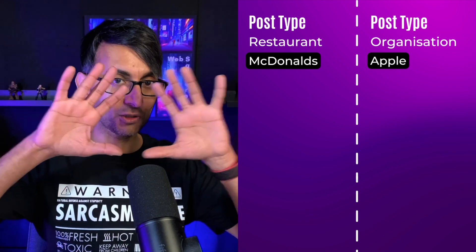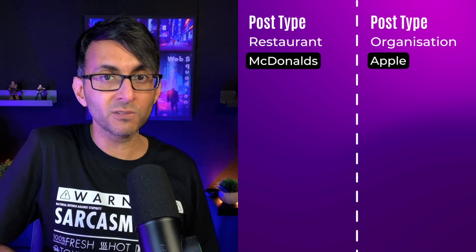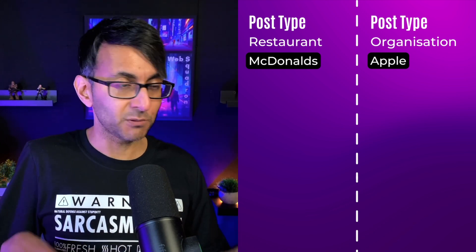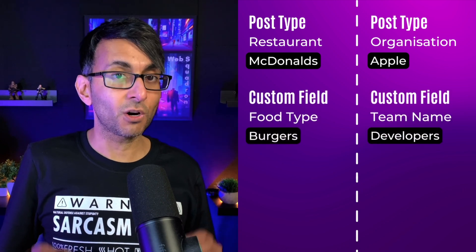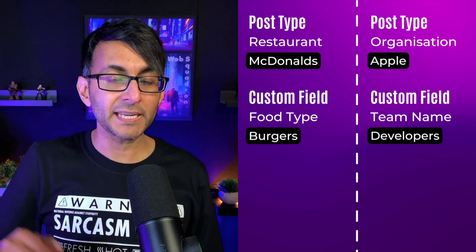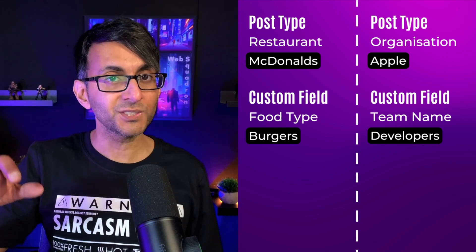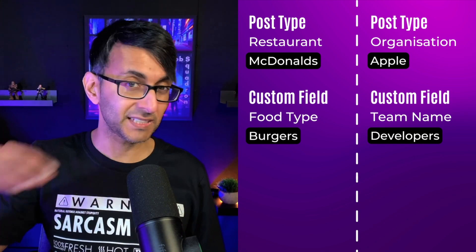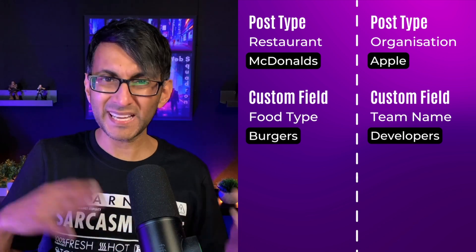We've got another post type for organization and here we've got Apple. McDonald's and Apple are the entries. So you've created your post type 'restaurants,' and then you go and add a new post and you give it a title — in this scenario, McDonald's. So you've got your custom post type, you've added it, and now you're going to add in a new post. Inside each of those post types we're going to have custom fields, and the restaurant's custom field is actually going to be the food type — things like snacks, burgers, drinks, salads, etc.